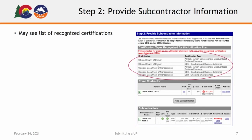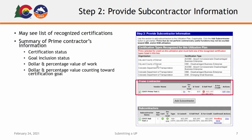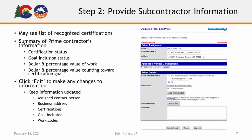Step 2 of the utilization plan is where you will provide the information for the subcontractors hired for the project. In this section, you may see a list that will provide the certification types recognized for this project. You will also see a section that provides a summary of the prime contractor's information, including their certification status, their goal inclusion status, the dollar percentage value of the work to be performed, and the dollar value percentage counting towards the certification goal.